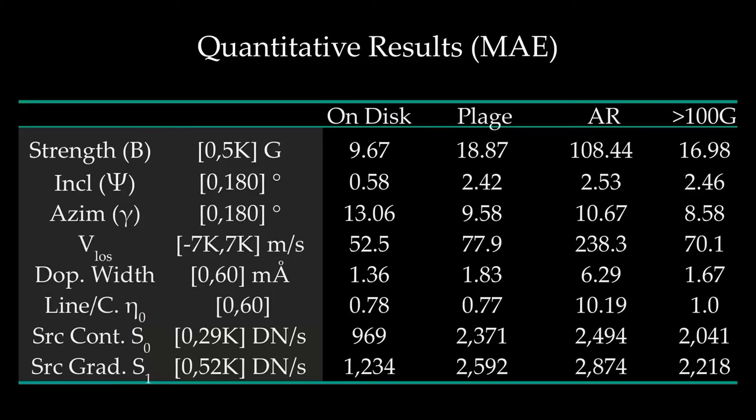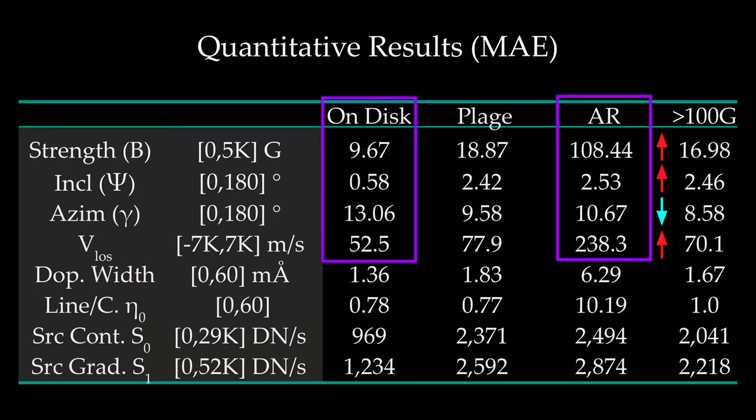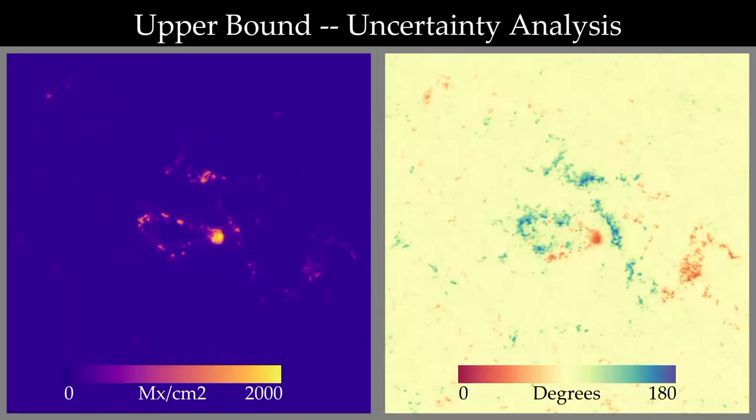Here we actually divide up the measurements of this average error into on disc values, plage regions, active regions, and greater than a hundred gauss. So by doing that, we can understand where our error is. And so overall across the disc, we can see pretty low error, but we do do worse in active regions. Here it can show that what I mentioned earlier, the azimuth measurements and predictions actually improve as you go to stronger field strength, whereas the other ones degrade as you go to stronger field strengths.